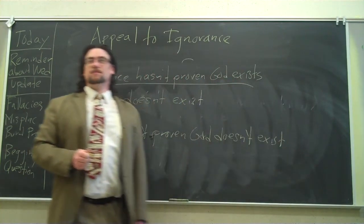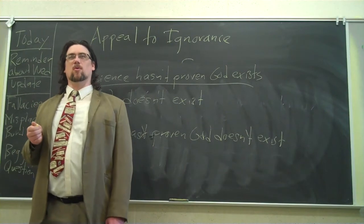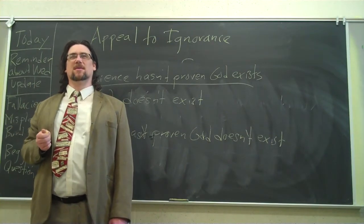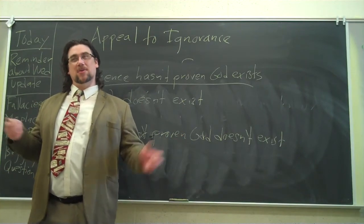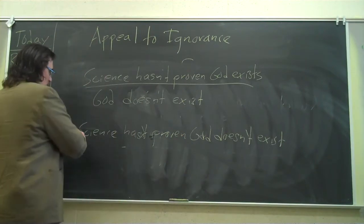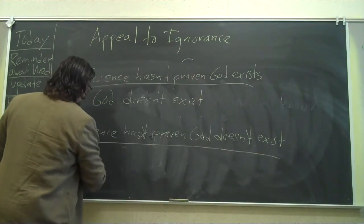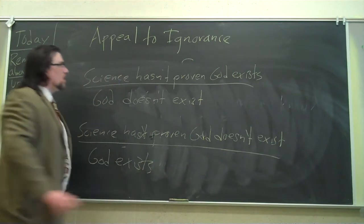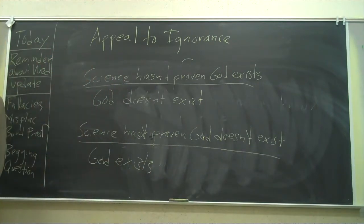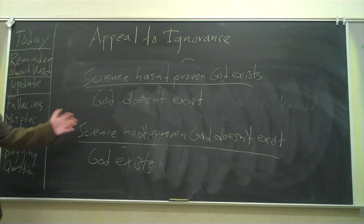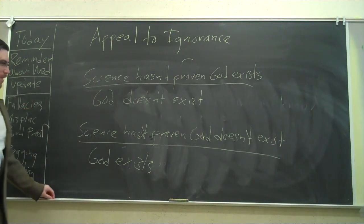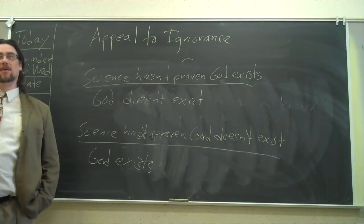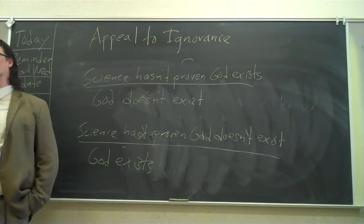They'll say things like there's no scientific evidence God exists. Therefore, God doesn't exist. You could just as well say science hasn't proven God doesn't exist. It's very hard to demonstrate a negative, isn't it? Proof to me that there wouldn't be three more people in this room if we had higher enrollment here at FSU. How would you go about that? Demonstrating a negative is quite often difficult. Science hasn't proven God exists. Therefore, God doesn't exist. Science hasn't proven God doesn't exist. Therefore, God exists. You notice, at this point, you should be saying, well, there's a big problem here because we can reach the opposite conclusions using the same argument.